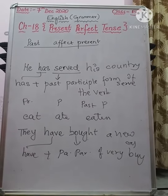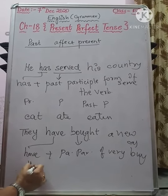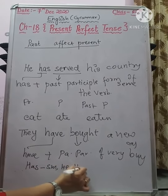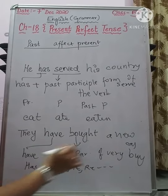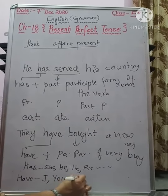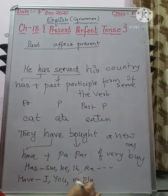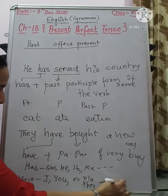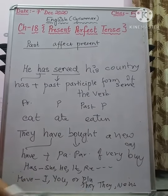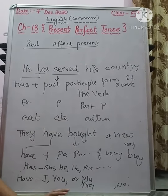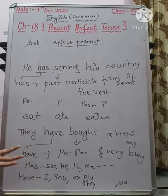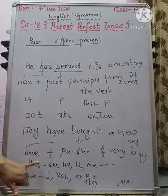'Has' is used with singular subjects — she, he, it, Reena, Geeta, and any other singular subject. 'Have' is used with I, you, and plural subjects — they, we, and groups like children, or when two or more people are mentioned. Whenever the subject is plural, 'have' is used. Whenever the subject is singular, 'has' is used.